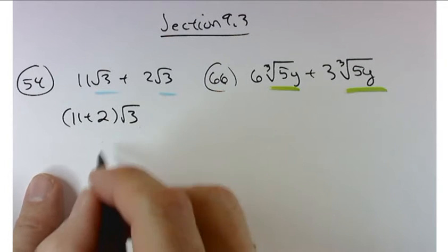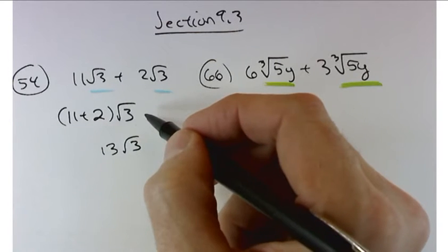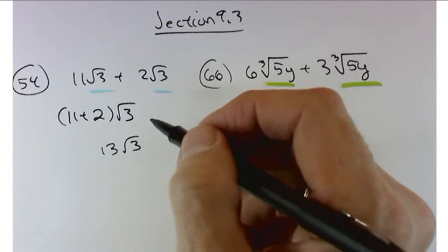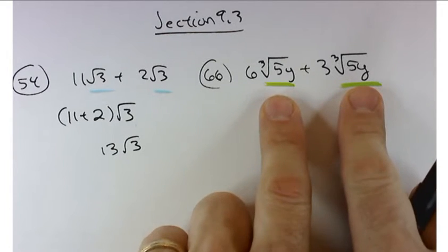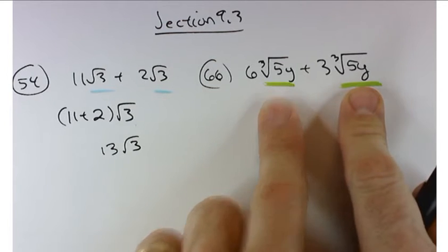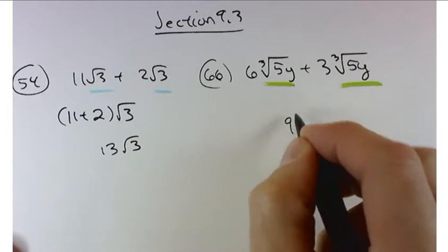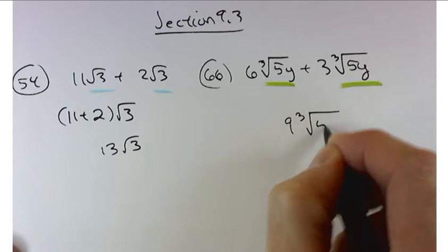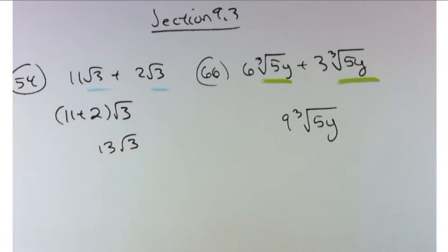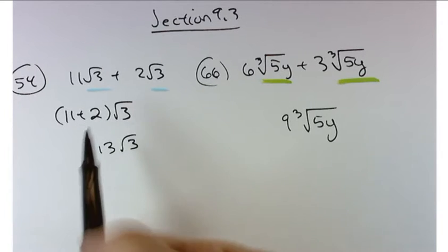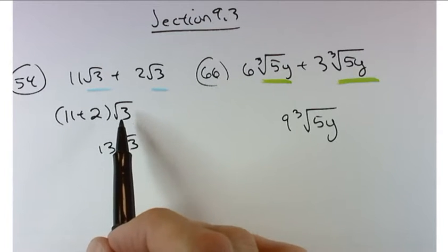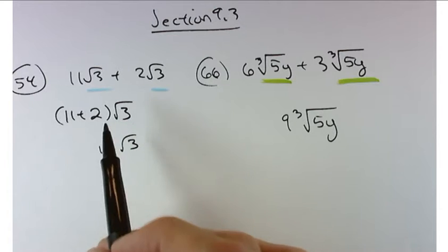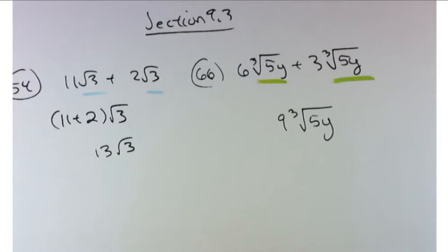We get 11 plus 2 is 13. Now do I want to see this step? No, I just want you to do it in your head. But we'll do the same thing here because we have like terms. So what would I get over here? Good, nine times the cube root of 5y. Another reason for doing this is to show you that we're just adding up the coefficients. We don't add what's underneath the radical. We don't get square root of 6 for instance. Just add up the coefficients. The same is true with 68.